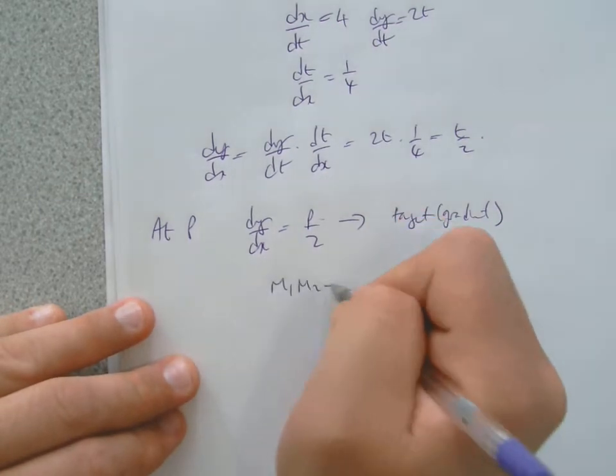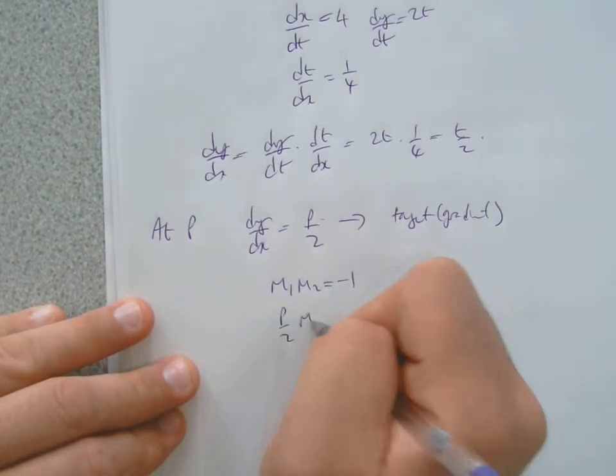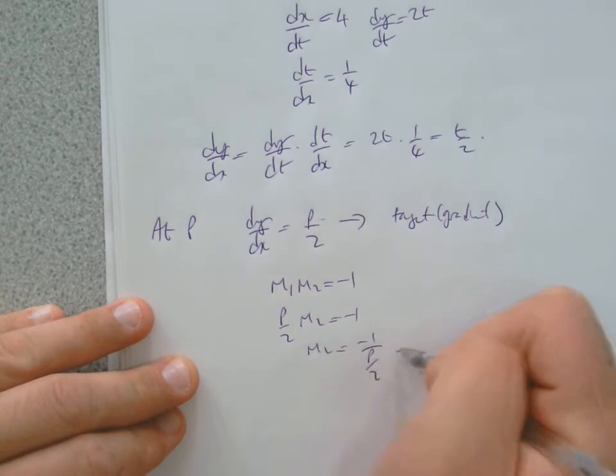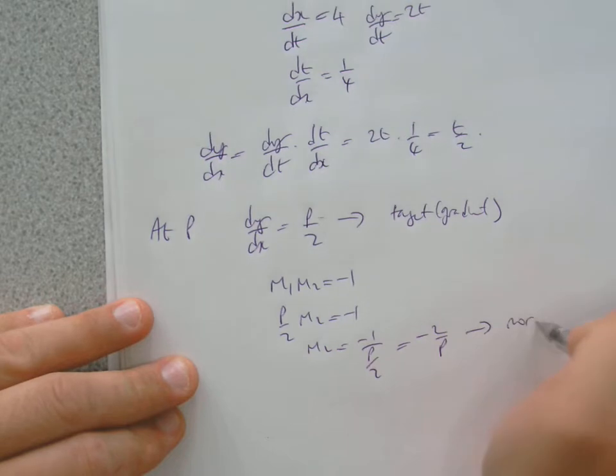So M1 M2 equals minus 1. So p over 2, M2 equals minus 1, so M2 will be minus 1 upon p over 2, which means that you get minus 2 upon p. That's the normal.